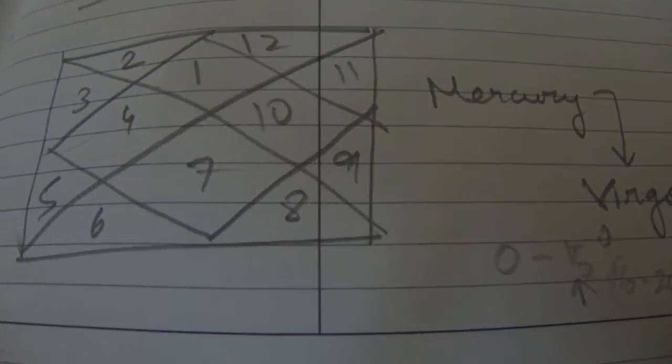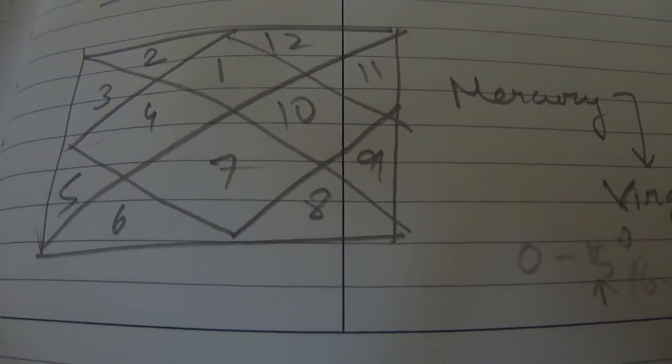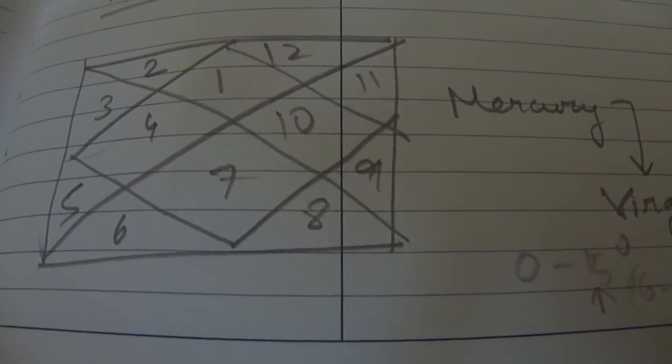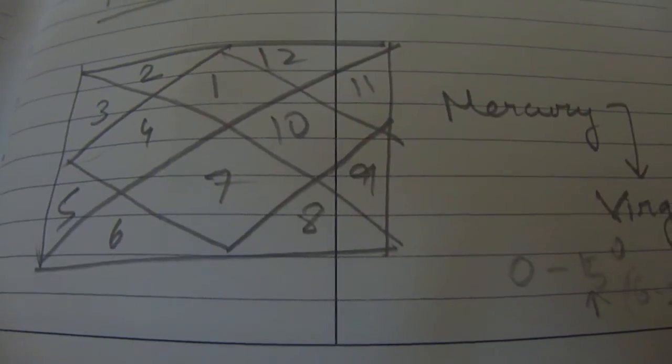First of all, what is Mercury all about? Mercury is about intelligence, being rational, being logical, being intelligent, being research oriented, being business minded, having good oratory qualities. So Mercury is all about that.